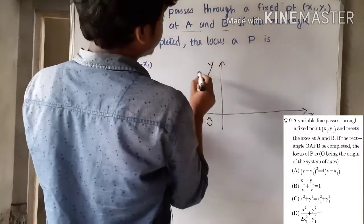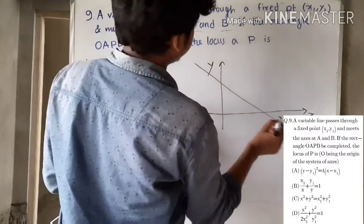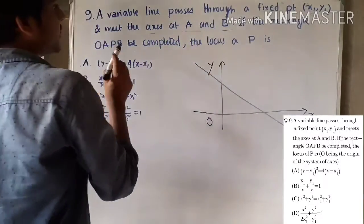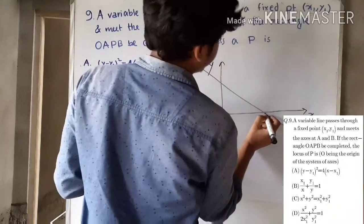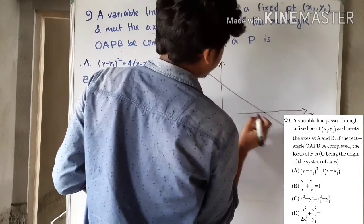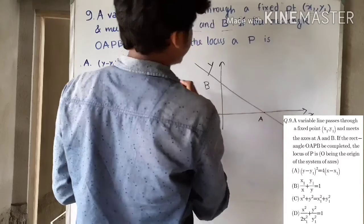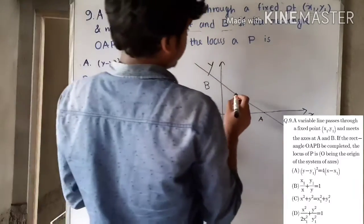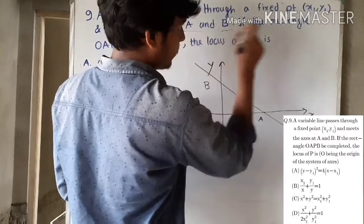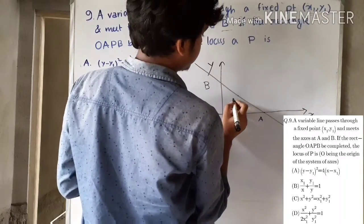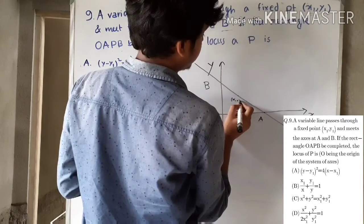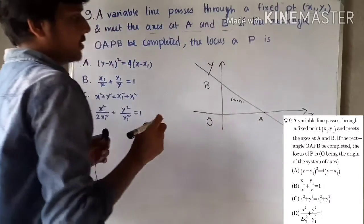This is the x-axis and this is the y-axis. The line meets the x and y axes at A and B. This is A and this is B.